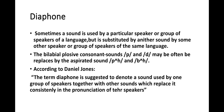Sometimes a sound used by one particular speaker or group of speakers of a language is substituted by another sound by a different speaker or group of speakers of the same language. For example, the bilabial consonant sounds /p/ and /b/ may often be replaced by aspirated sounds. According to Daniel Jones, the term 'diaphone' is used to denote a sound used by one group of speakers together with other sounds which replace it consistently in the pronunciation of other speakers.